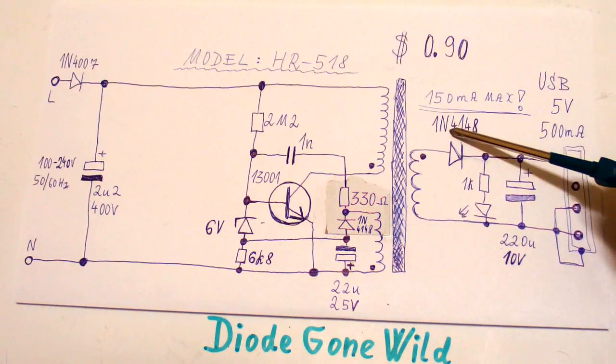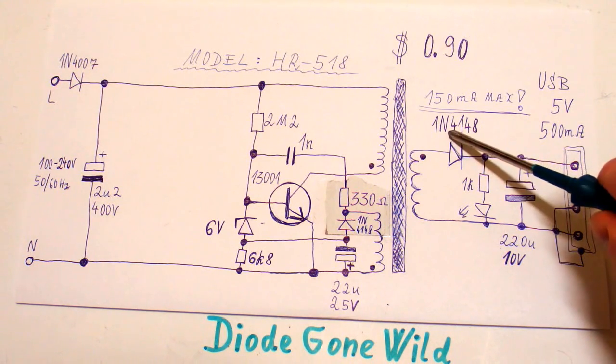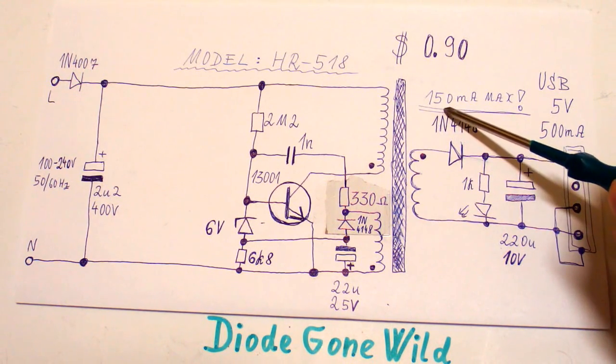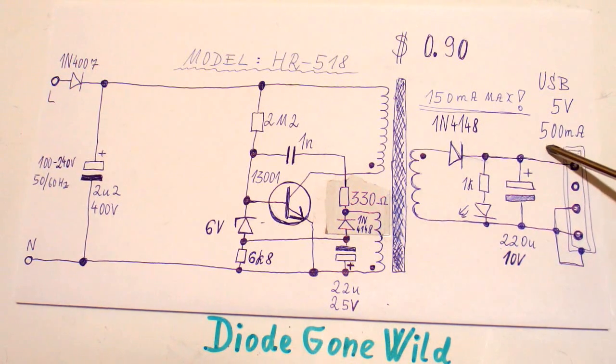And at the output there's one 1N4148 diode. And this diode is rated for 150 mA maximum. But the output current is 500 mA. That's just amazing.